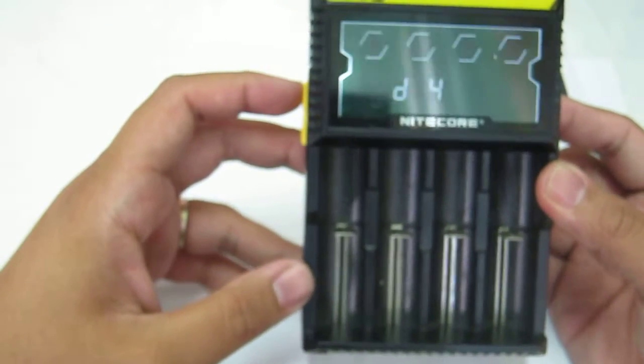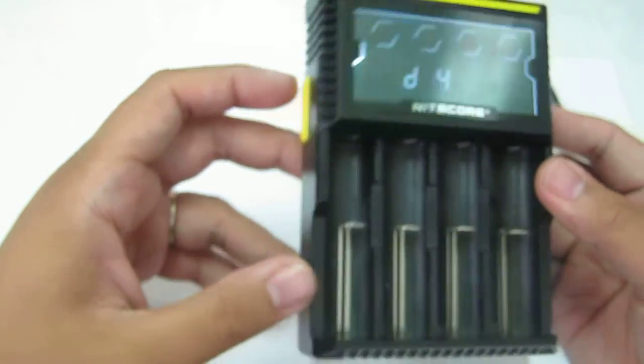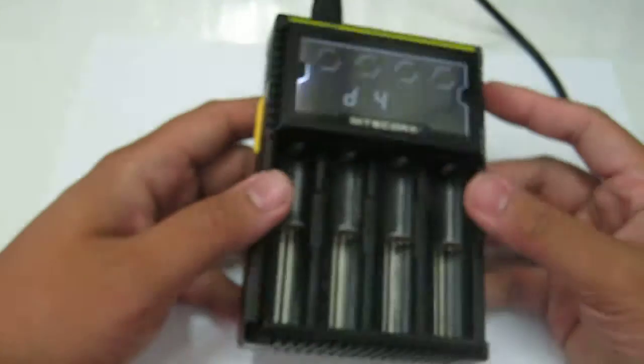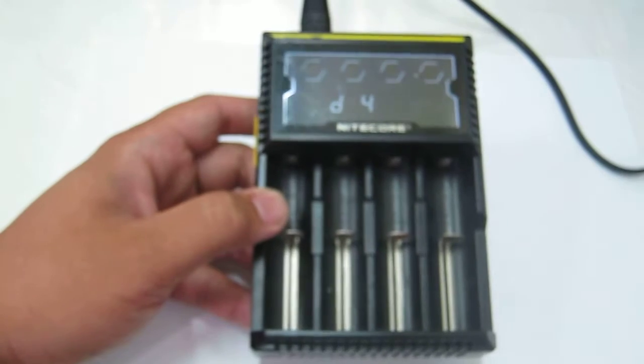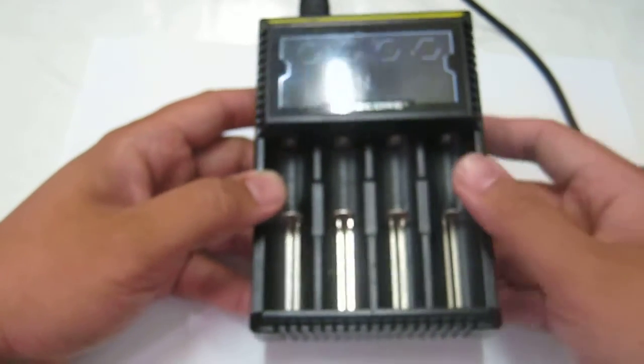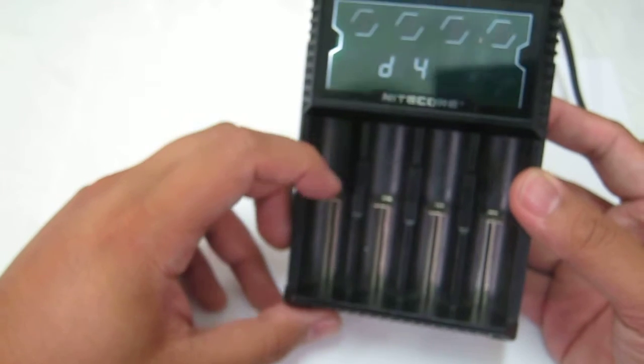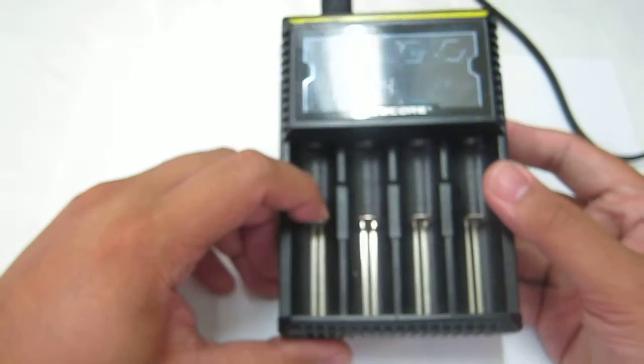It charges at a higher rate of 750 milliamps compared to the PowerBase which only charges at 500 milliamps. It can also accommodate more types of batteries.